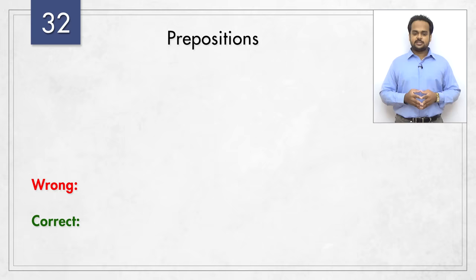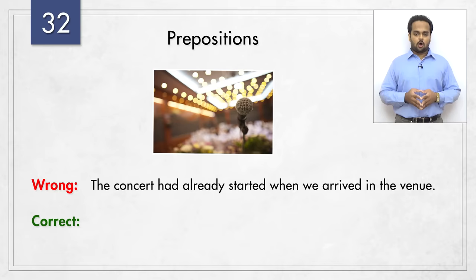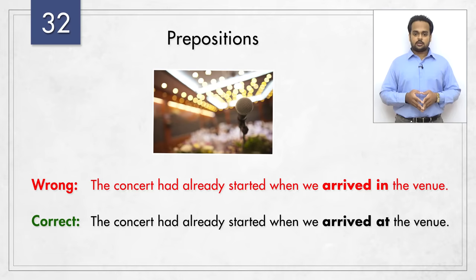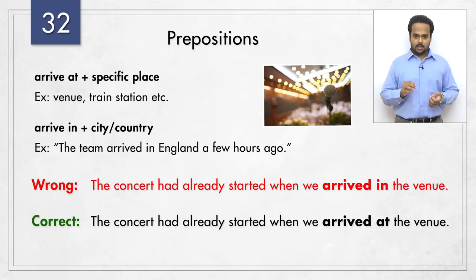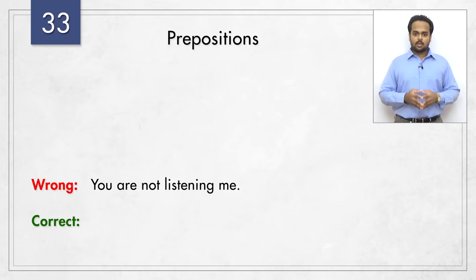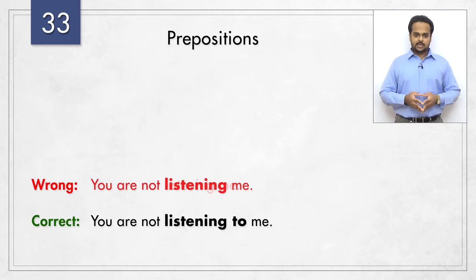Let's now turn to errors in the use of prepositions. 'The concert had already started when we arrived in the venue' should be 'arrived at the venue.' One reason prepositions are so tricky is that there can be different rules for different verbs. With the verb 'arrive,' we use 'at' to talk about reaching a place. But if we're talking about a city or a country, we use 'in' – 'the team arrived in England a few hours ago.' Next sentence – 'you are not listening me' – we need to say 'you are not listening to me.' After the verb 'listen,' remember to put 'to.'